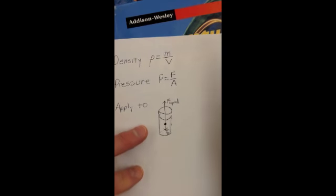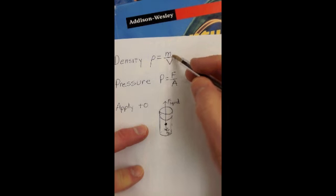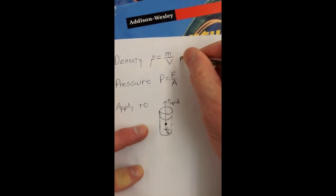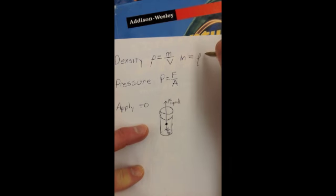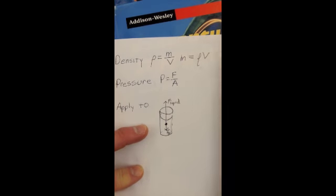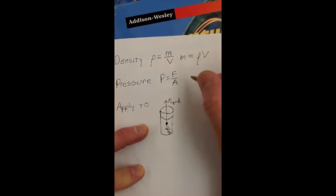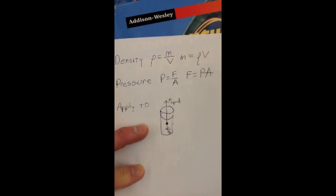What we will use a lot is we will solve for mass. This implies that mass equals the density times the volume. Those are equivalent. In a minute, you're going to see where we use force equals pressure times area. But the definitions of density and pressure are these formulas, and these formulas you'll be given on the test if you need them.